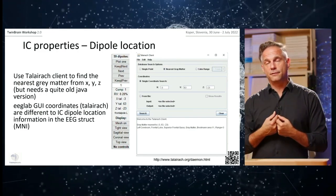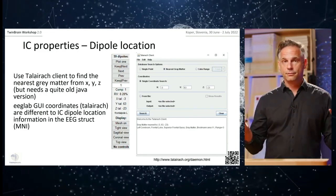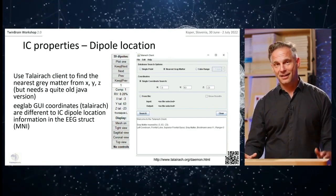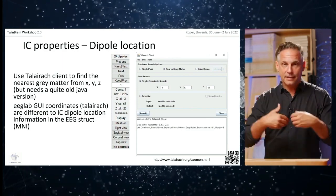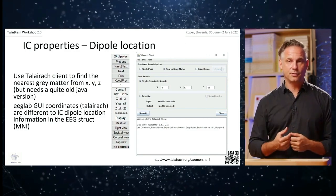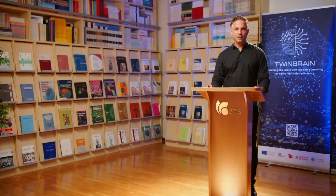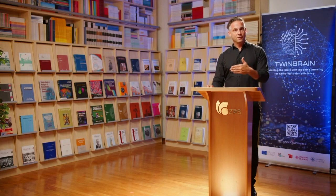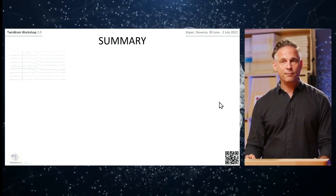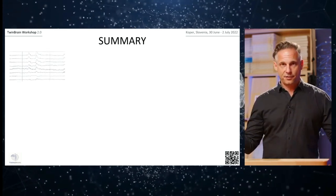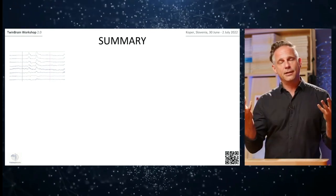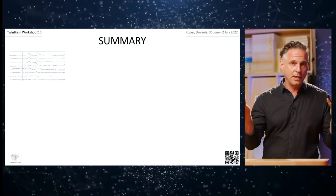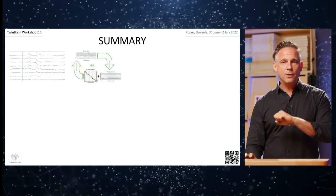This puts EEG clearly forward as an imaging method — we're not talking about sensor space only anymore, but about independent activity localized to specific brain regions. That is essentially the same information, with some restrictions, as what we get from other imaging methods. In summary: we have continuous EEG data contaminated with various unwanted activity, and then we apply ICA.